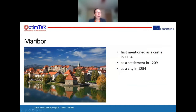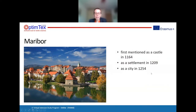Maribor is the second biggest city in Slovenia and the largest city of the traditional region of Lower Styria. It is also the seat of the City Municipality of Maribor, the Drava Statistical Region — near Maribor there is the Drava River — and the Eastern Slovenian Region. Maribor is the economic, administrative, educational, and cultural center of eastern Slovenia.